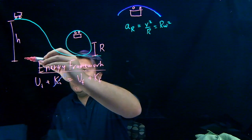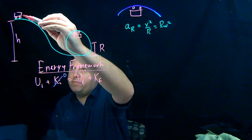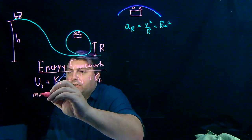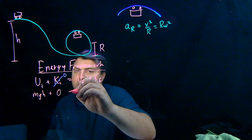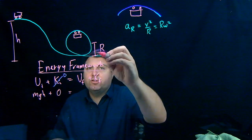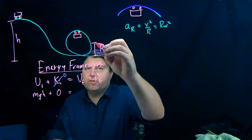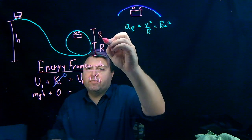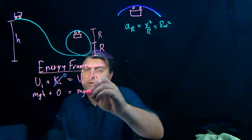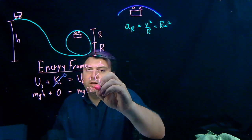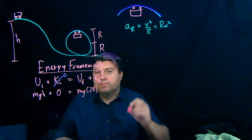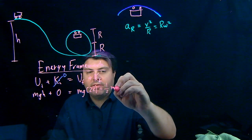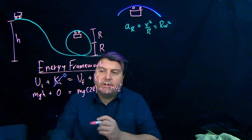At the initial point, the energy is the mass times gravity times h, so mgh, and the initial kinetic energy is zero. At the final stage, the height is two radii up, so the potential energy is mg times 2r. The final kinetic energy is one-half m vf squared. So right now we have two unknowns: the height h and the final velocity vf.